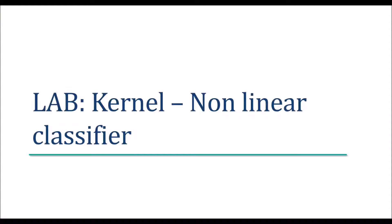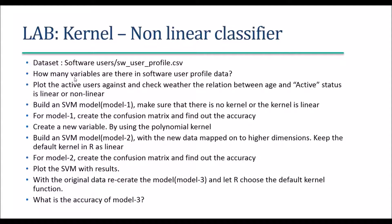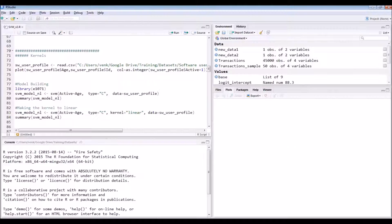Now let's understand the kernel trick by transforming data into higher dimensions using an example in our tool. We will use a software user profile dataset, see how many variables there are, and build a model to predict whether a person is still actively using the software or not. We'll check whether the relationship is linear or nonlinear, and if nonlinear, we'll use the kernel trick to solve the problem.